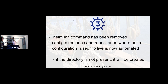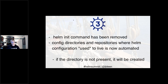Another big change: configuration directories and repositories. Where Helm used to live — your home directory slash `.helm` — has been changed to be more standard across open source projects. When you install Helm itself, it will automatically set up any configuration directories that don't already exist. If you're updating your version of Helm 3, it'll leave the directories you already have, but it'll automatically create them upon fresh installation.